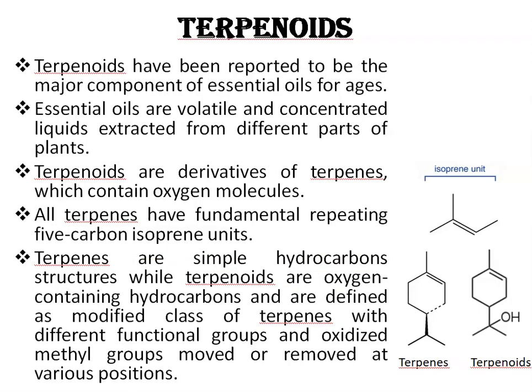Terpenoids have been reported to be the major component of essential oils for ages. Essential oils are volatile and concentrated liquids extracted from different parts of plants. Terpenoids are derivatives of terpenes which contain oxygen molecules, and all terpenes have a fundamental repeating 5-carbon isoprene unit in their structure. Terpenes are simple hydrocarbon structures, while terpenoids are oxygen-containing hydrocarbons defined as a modified class of terpenes with different functional groups and oxidized methyl groups moved or removed at various positions.